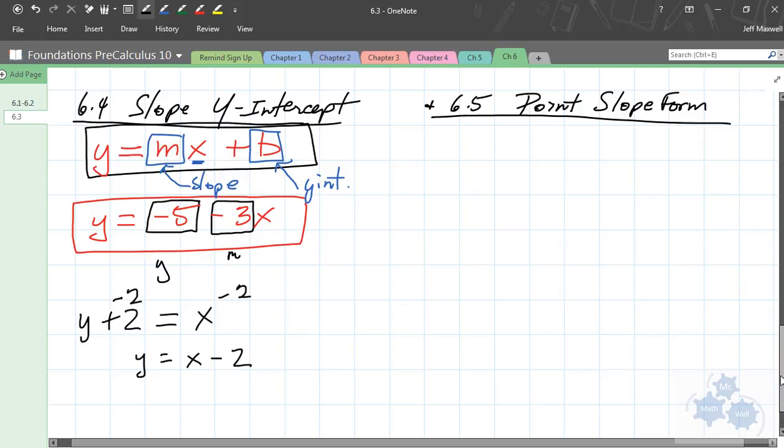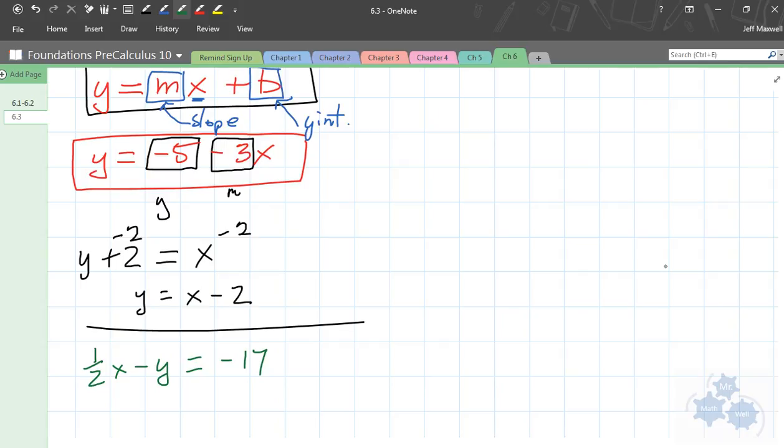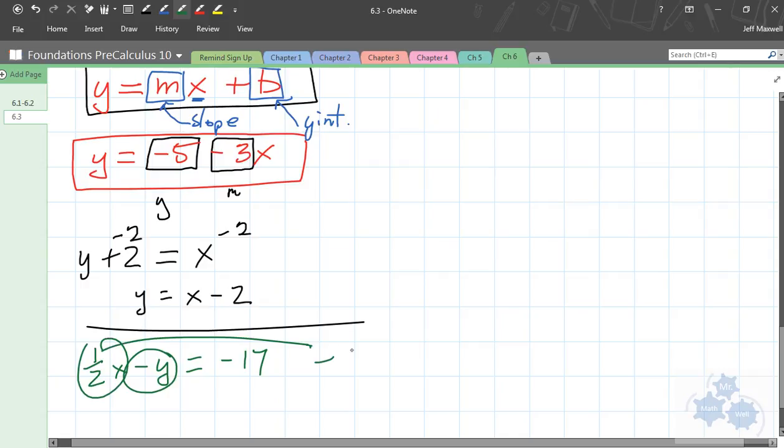I'm just going to do one more here, one more little test for you. What about this one? One half x minus y equals negative 17. Now, without rearranging that, can any of you sort of rearrange this in your head and tell me what this slope is? One half? Anybody agree with that or think it's something else? Negative one half, maybe? Positive one. Who votes positive one half? Who votes negative one half? Who doesn't know?